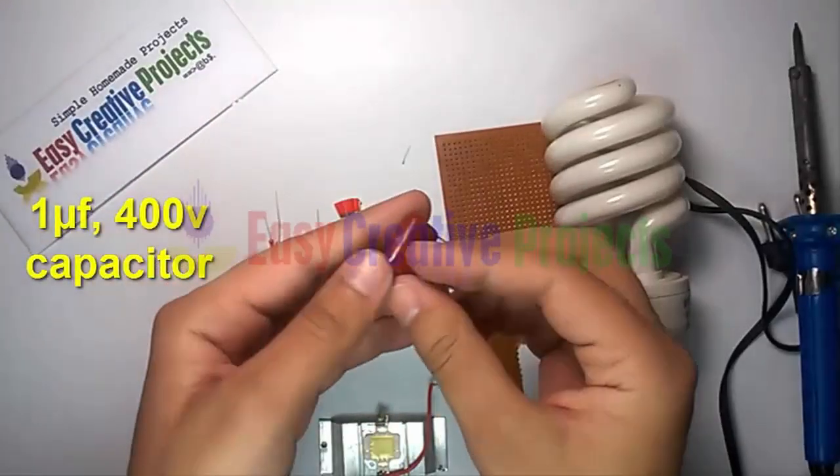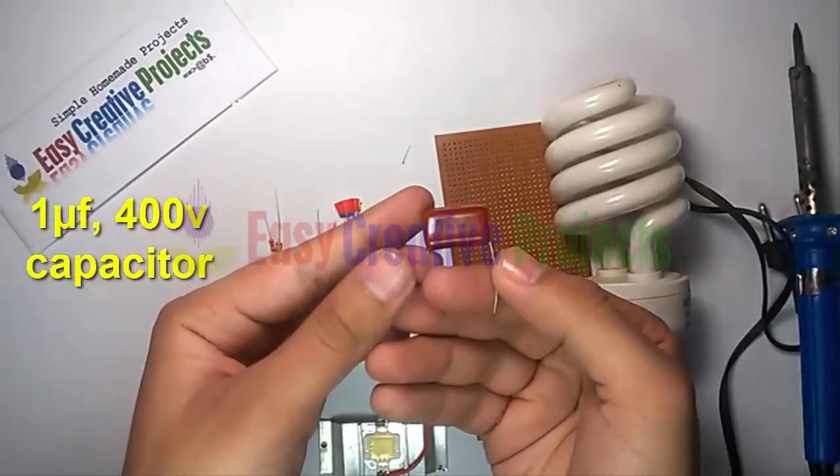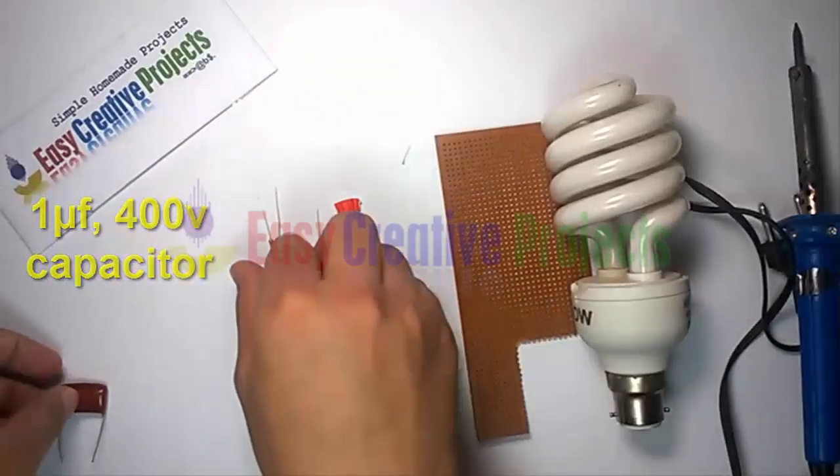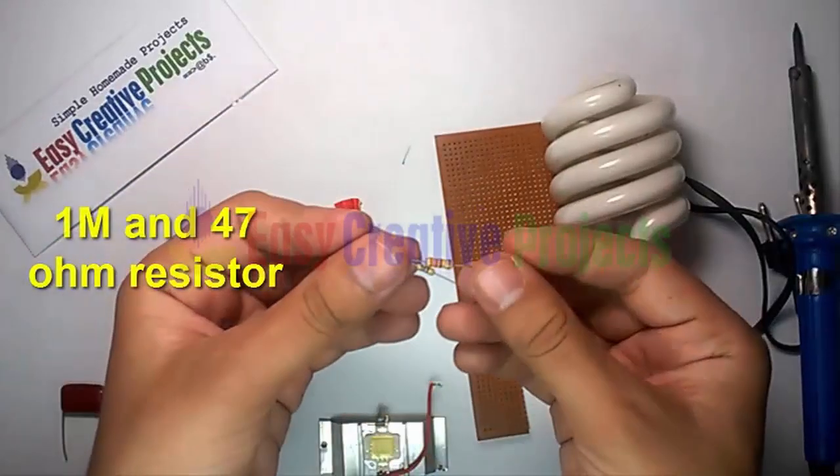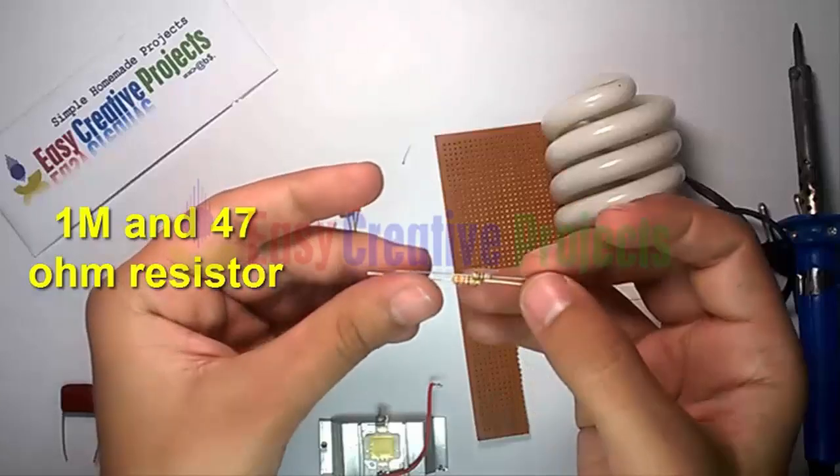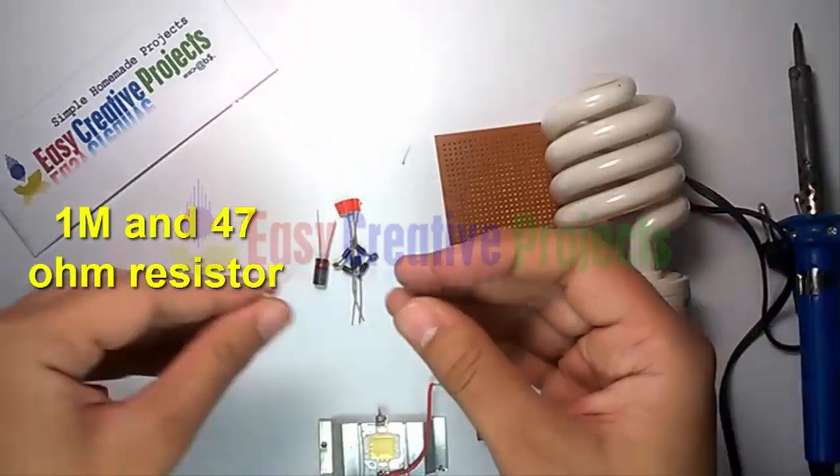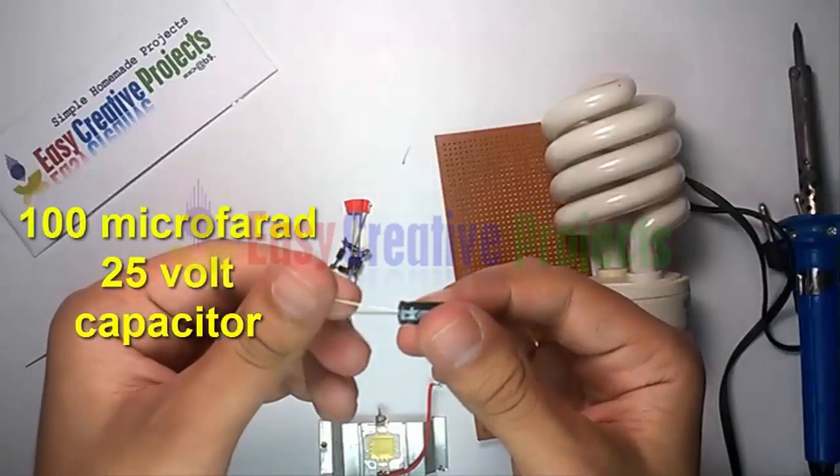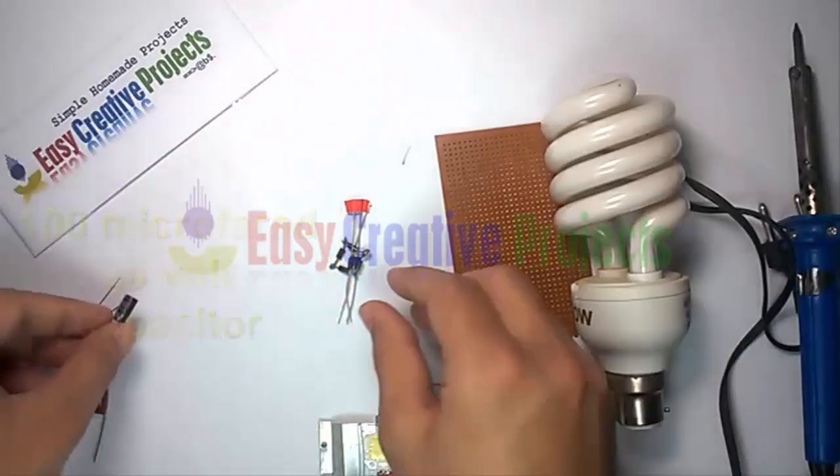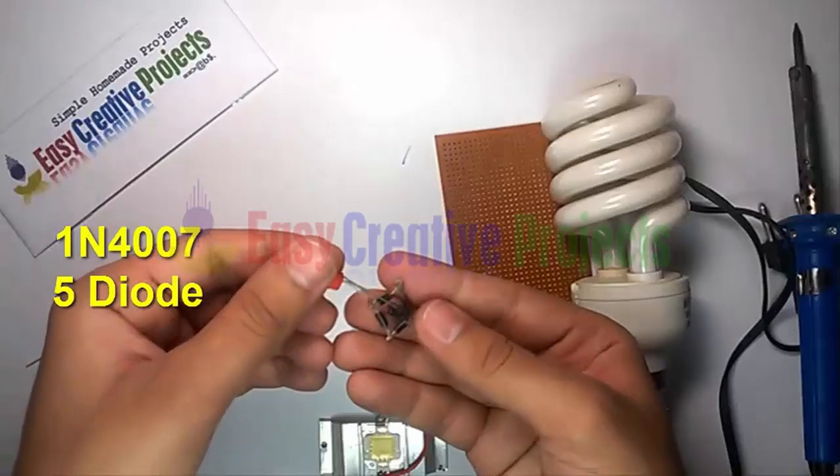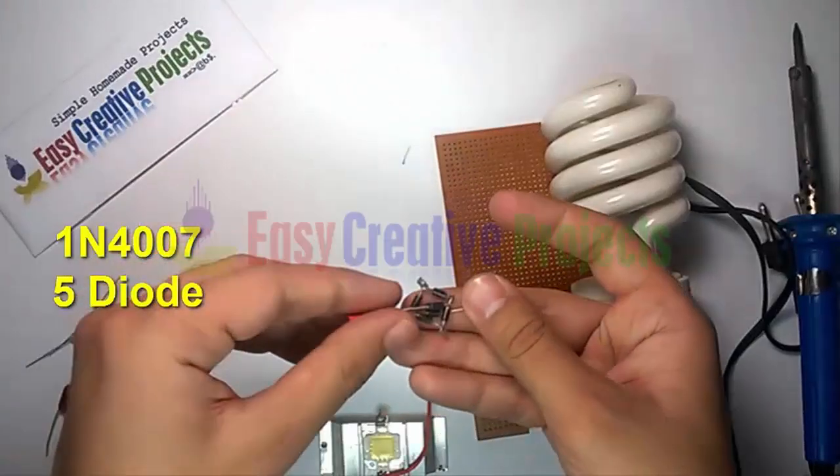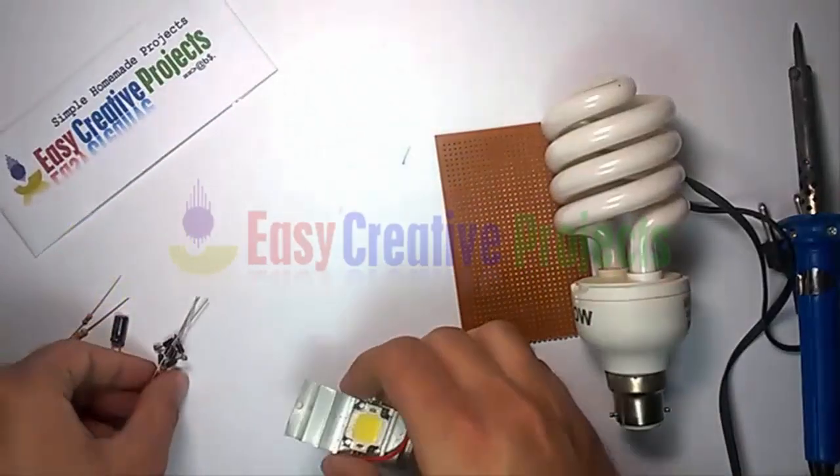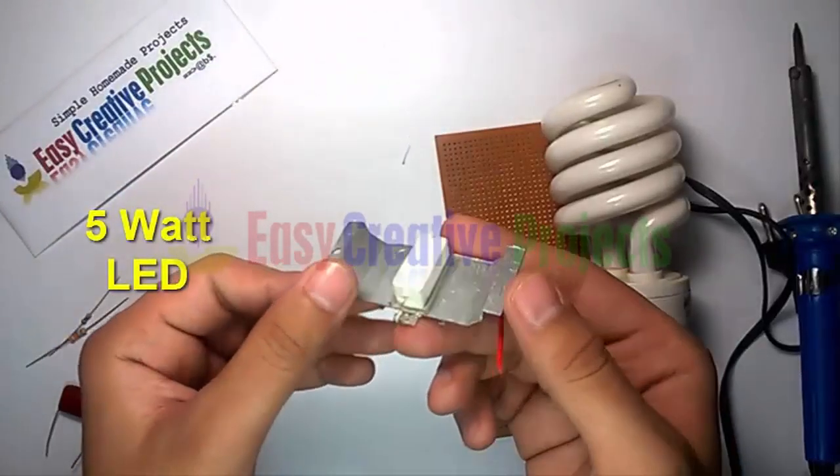1 microfarad 400 volt capacitor, 1M 47 ohm resistor, 100 microfarad 25 volt capacitor, 5 diodes of 1N4007, and a 12 volt 5 watt LED.